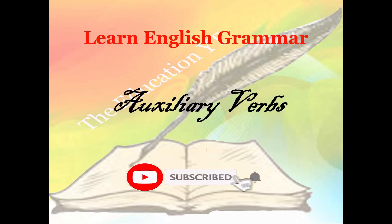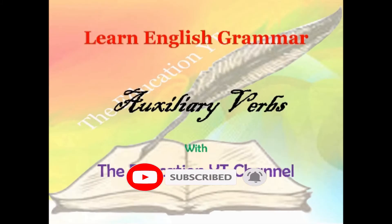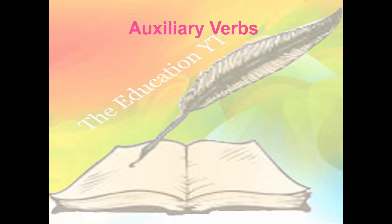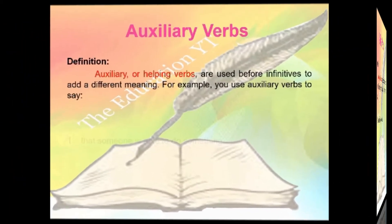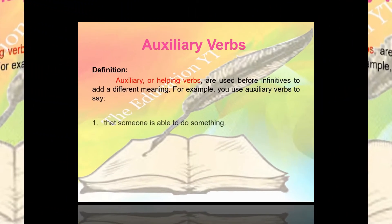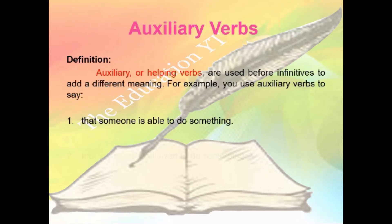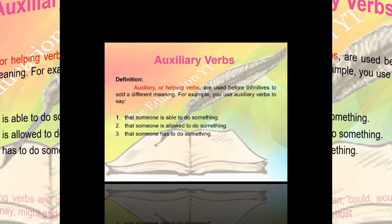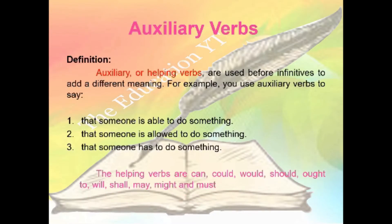Learning English grammar: auxiliary verbs. Auxiliary or helping verbs are used before infinitive to add a different meaning. You use auxiliary verbs to say: number one, that someone is able to do something; number two, that someone is allowed to do something; number three, that someone has to do something. The helping verbs are can, could, would, should, will, shall, may, might, and must.